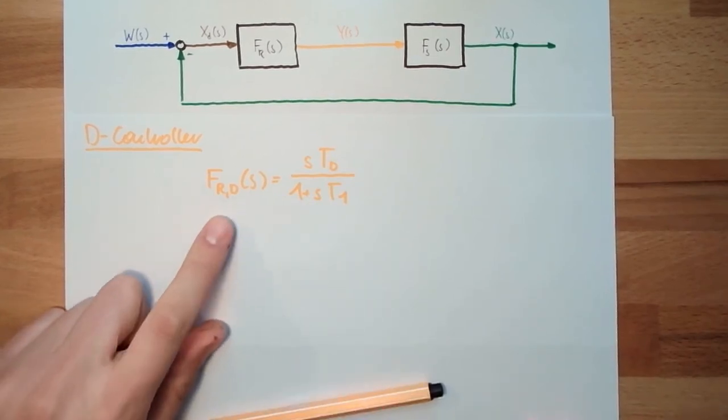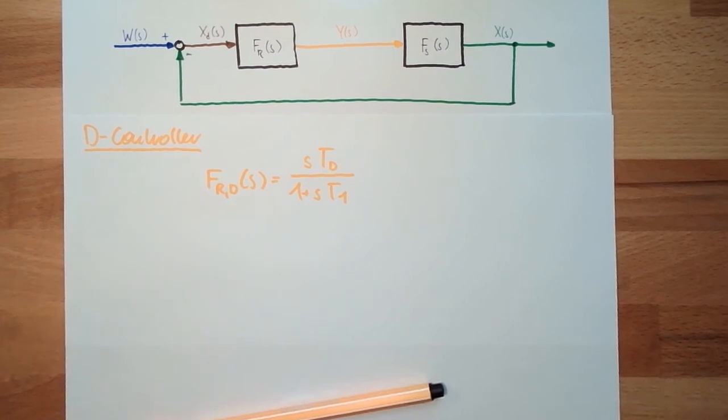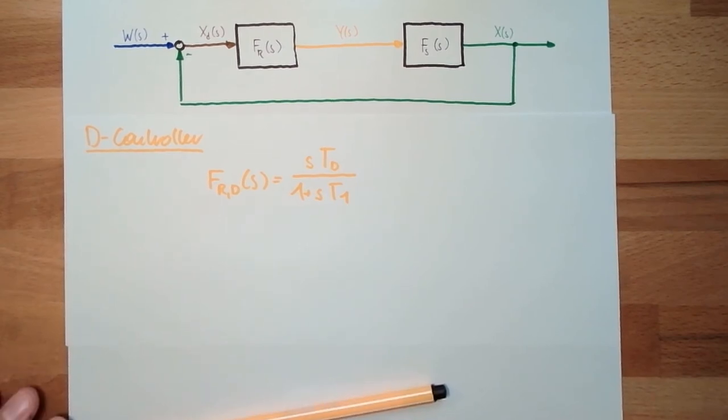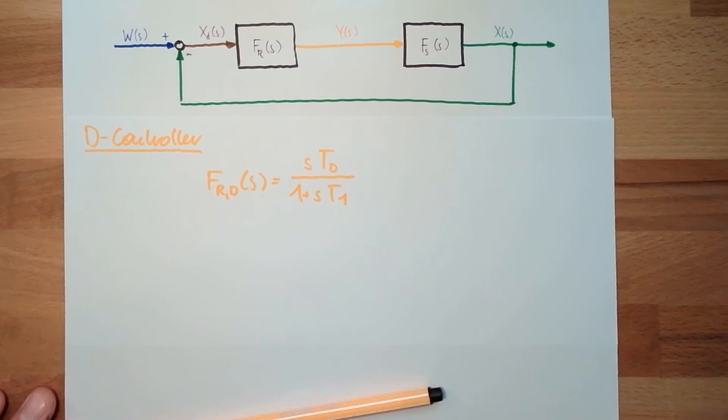However, a D-controller is sometimes used in combination with other controller types. A D-controller sometimes adds a little bit more stability. This is because it has a phase value of plus 90 degrees, and this we can use sometimes very good.